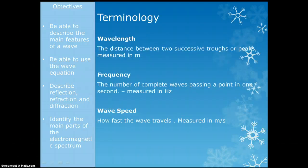A couple definitions we need: wavelength is the distance between two successive troughs or peaks, measured in meters. Frequency tells us how many complete waves pass a point in one second, measured in Hertz (Hz). Wave speed tells us how fast the wave is traveling, measured in meters per second.